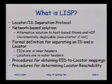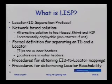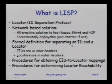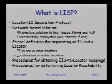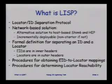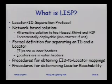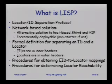LISP is a formal definition of separating the ID and the Locator. We're going to use a map and encapsulation scheme where the inner header — the header built by the host — are EIDs. They're still IP addresses as we know and love them. EIDs are in the inner headers, built by the host. You get those addresses out of DNS. Hosts don't have to change. The idea of LISP is no host changes, no major infrastructure changes. The tunnel routers that do the encapsulation will put a new header on the outside of the packet. The outside headers will be locator addresses — those are the addresses that are routed in the Internet based on topological significance. The LISP internet draft describes procedures on how to obtain these EID-to-locator mappings and procedures for determining locator reachability.